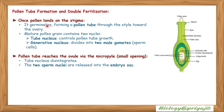Pollen tube formation: once pollen lands on the stigma, it germinates, forming a pollen tube that grows through the style towards the ovary. Each pollen grain contains two nuclei: the tube nucleus, which controls pollen tube growth, and the generative nucleus, which divides into two male gametes or sperm cells. The pollen tube reaches the ovule via the micropyle — a small opening.